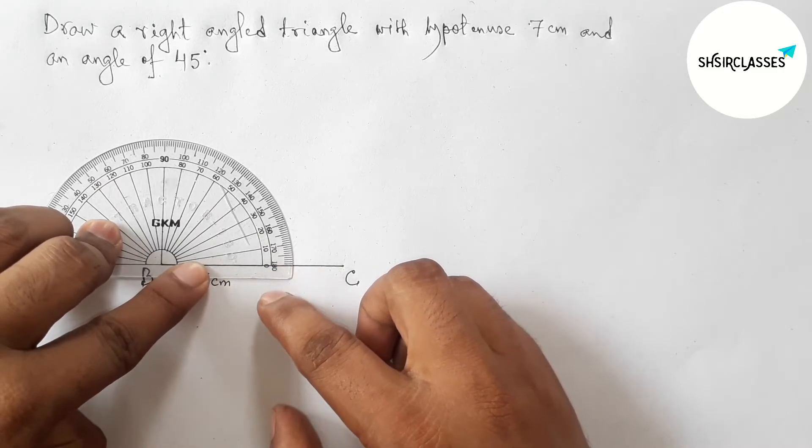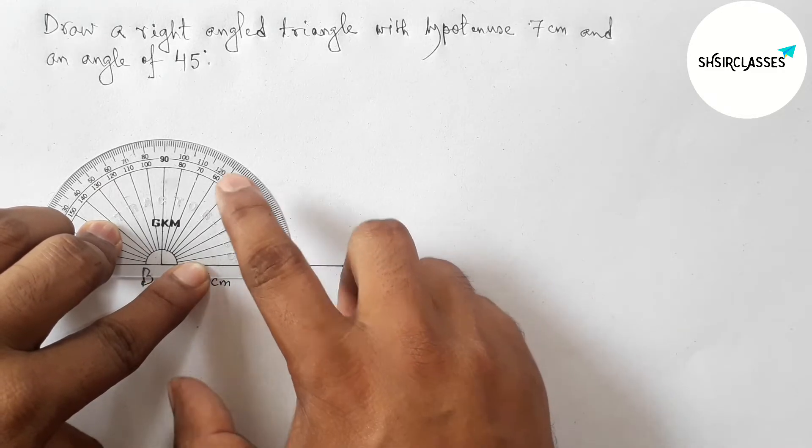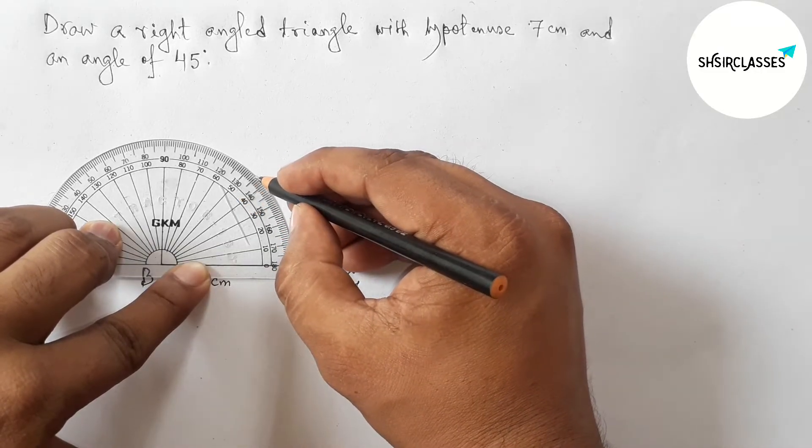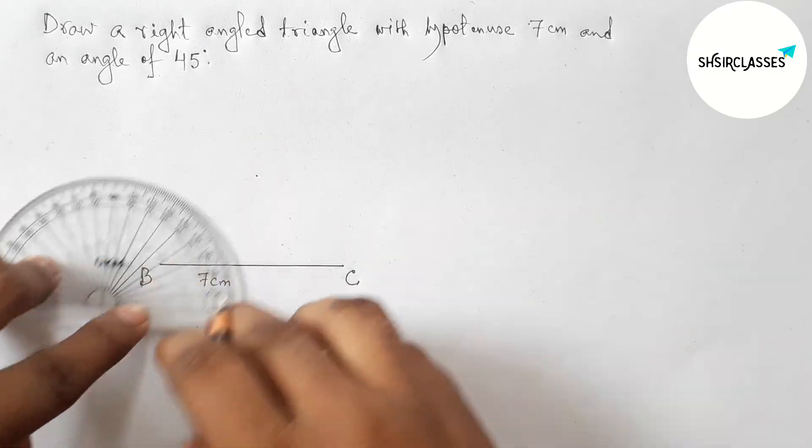Next, drawing 45 degree angle with the help of protractor on the point B. So now measuring 45 degree angle.